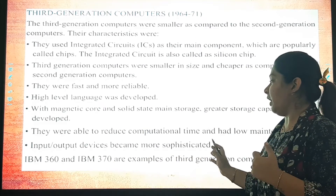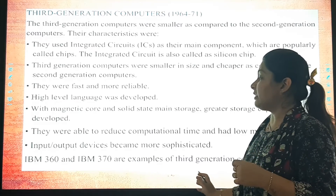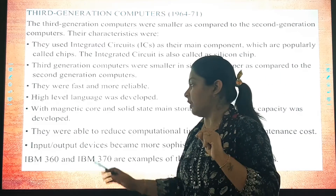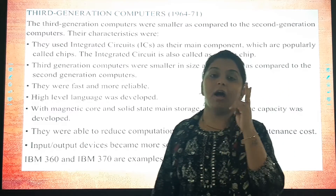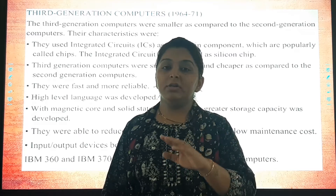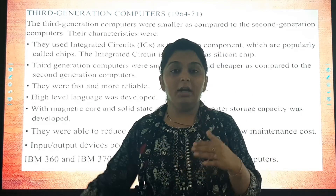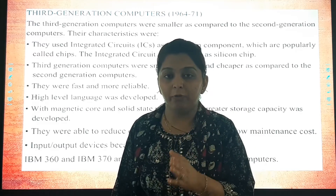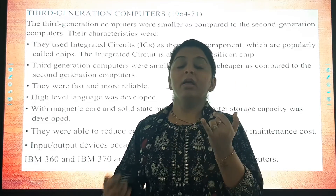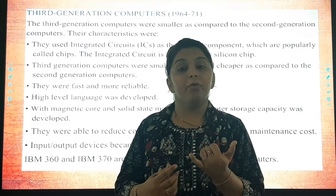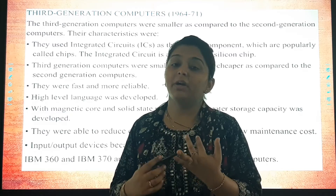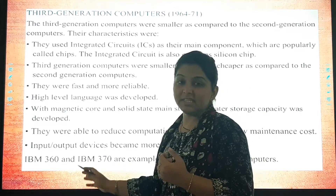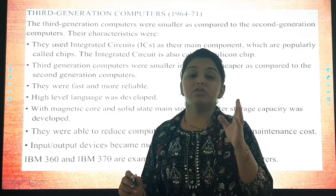Input and output devices also became more sophisticated. The two examples of third generation computers to remember are IBM 360 and IBM 370. To recap: integrated circuits (popularly known as chips, also called silicon chips) were the main component. They were faster, smaller, more reliable, and cheaper than second generation computers. Examples: IBM 360 and IBM 370.